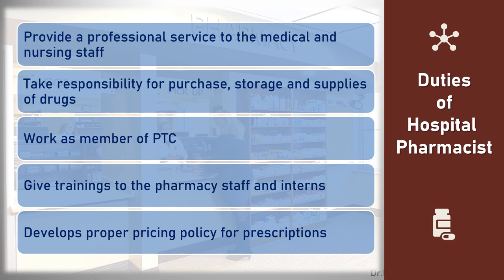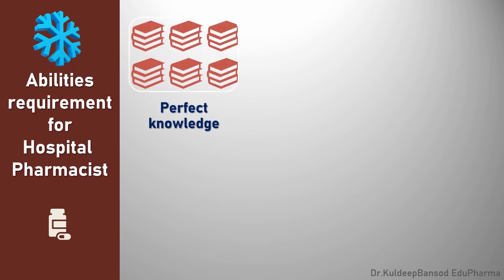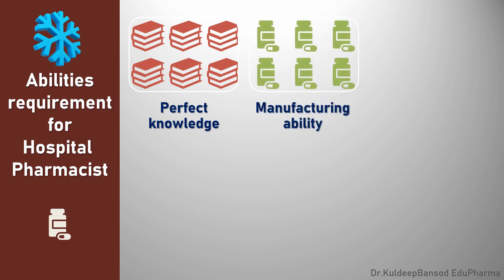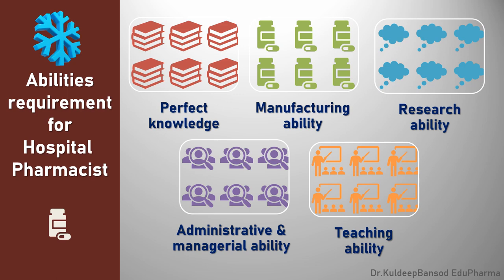There are the responsibilities of the hospital pharmacist. He provides a professional service to the medical and nursing staff. He is responsible for purchase, storage, and supply of drugs and hospital supplies. He should work as a member of the pharmacy and therapeutic committee, give training to pharmacy staff and intern students, and develop a proper pricing policy for prescriptions. To perform these duties efficiently, the hospital pharmacist should possess certain abilities: perfect knowledge of all operations, manufacturing ability, research ability, administrative and managerial ability, and teaching ability.